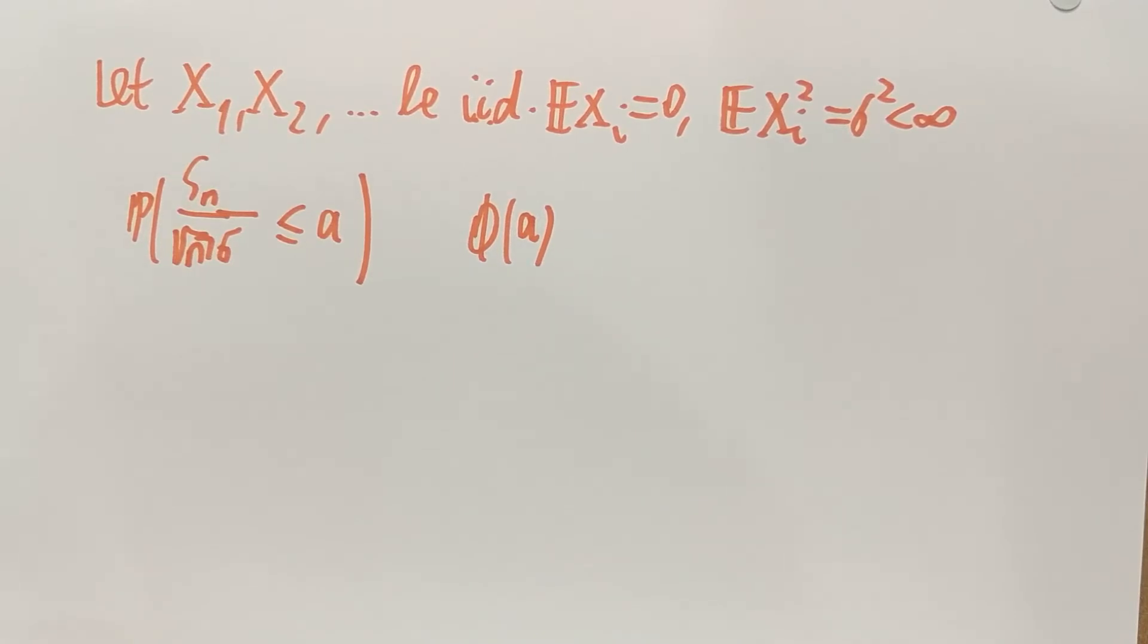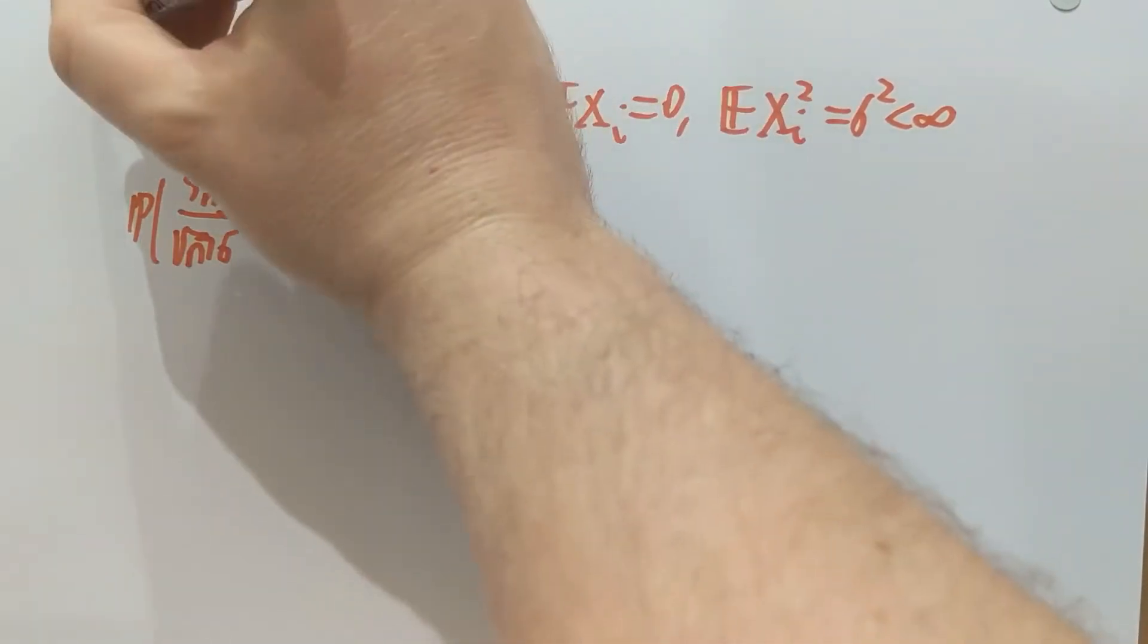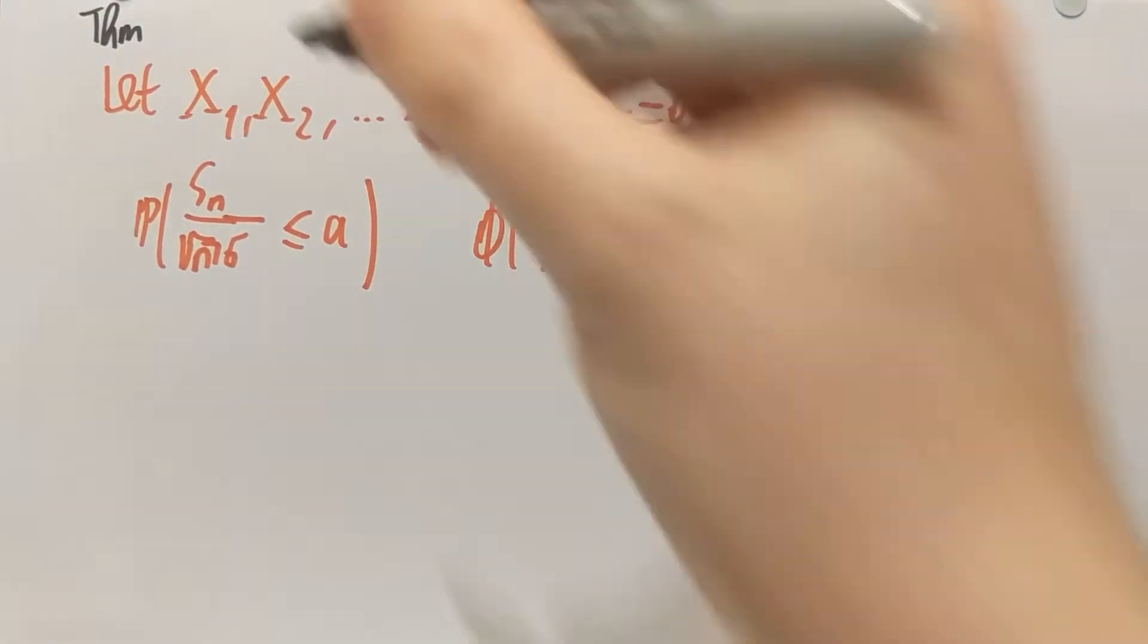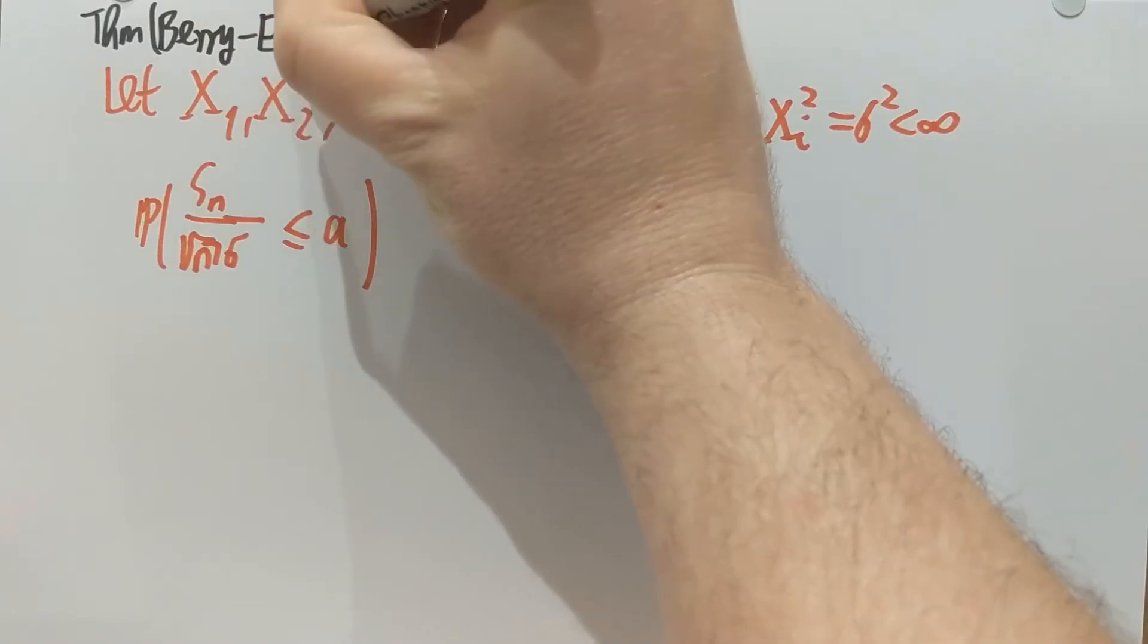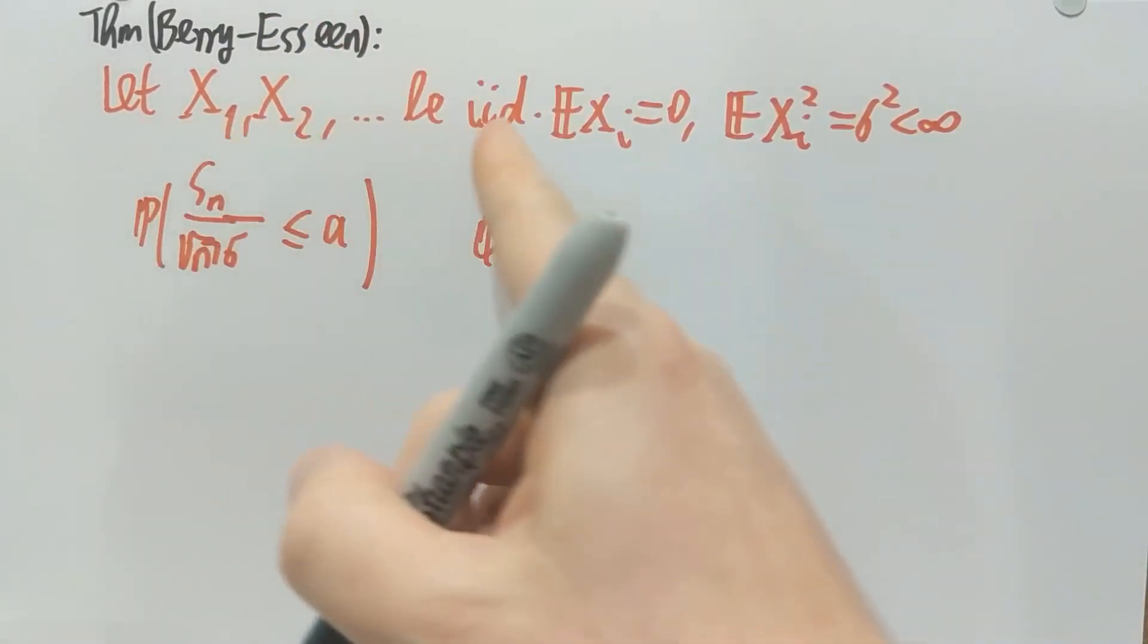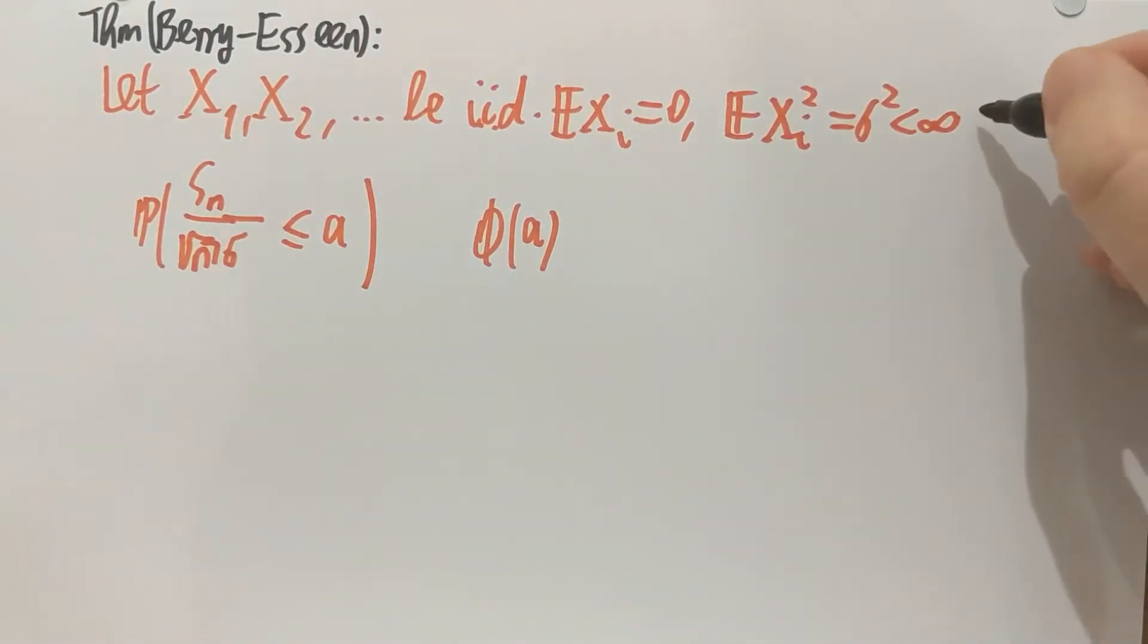So now the Berry-Esseen theorem states the following. It's telling about the error bound here, how far these two are from each other. So let me add here the theorem, Berry-Esseen. Let Xᵢ be iid, mean zero, finite variance sigma squared, and I'm also going to assume for this theorem that we have a finite third moment as well.